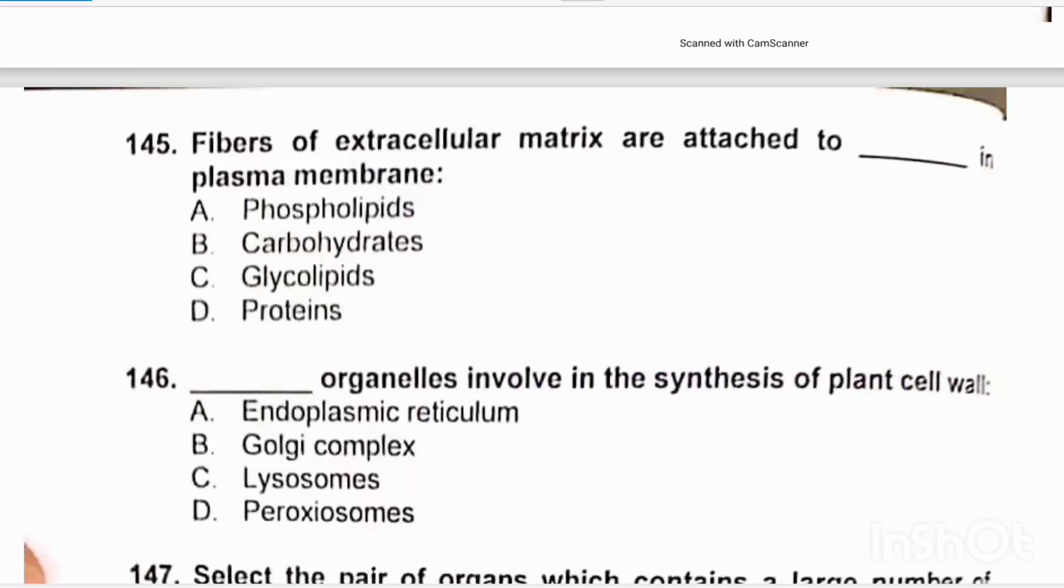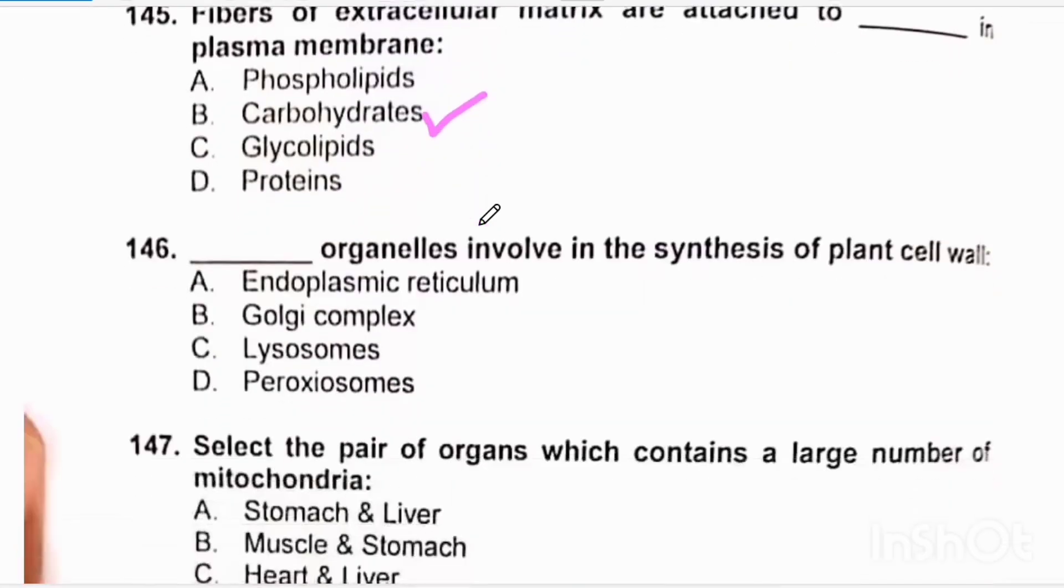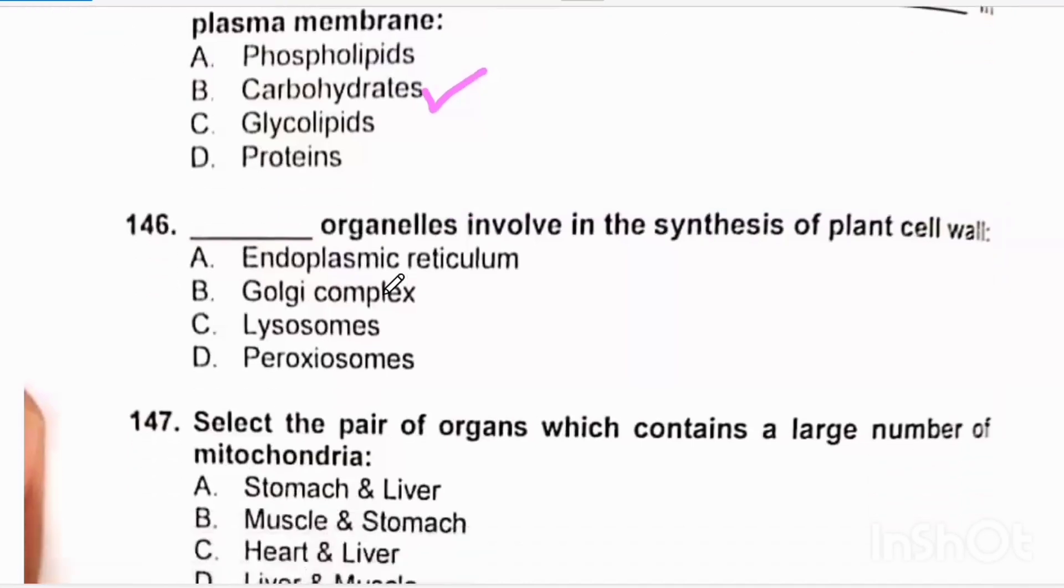Fibers of extracellular matrix are attached to carbs in plasma membrane. The function of carbs in the plasma membrane is to attach to the extracellular matrix and they form the glycocalyx of the membrane. Lipids are involved in fluidity of the membrane, and carbs are attached to extracellular matrix. The organelle involved in the synthesis of plant cell wall is Golgi complex.